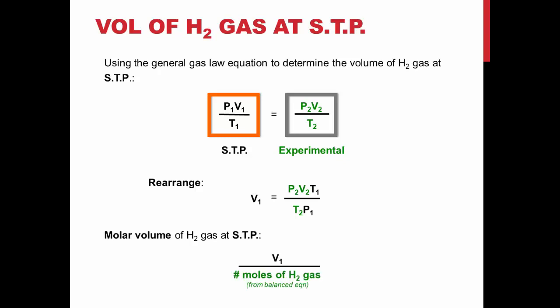Finally, division of the molar volume by the number of moles you use will give you the volume of one mole of hydrogen gas at STP.